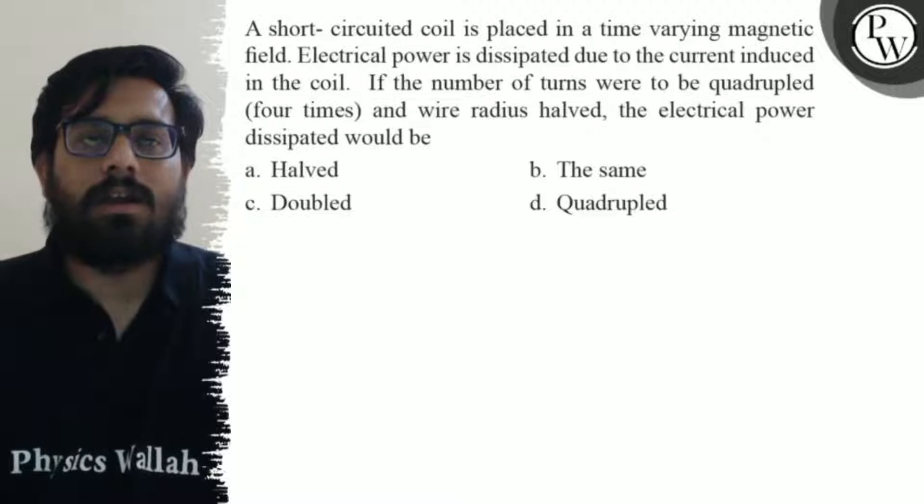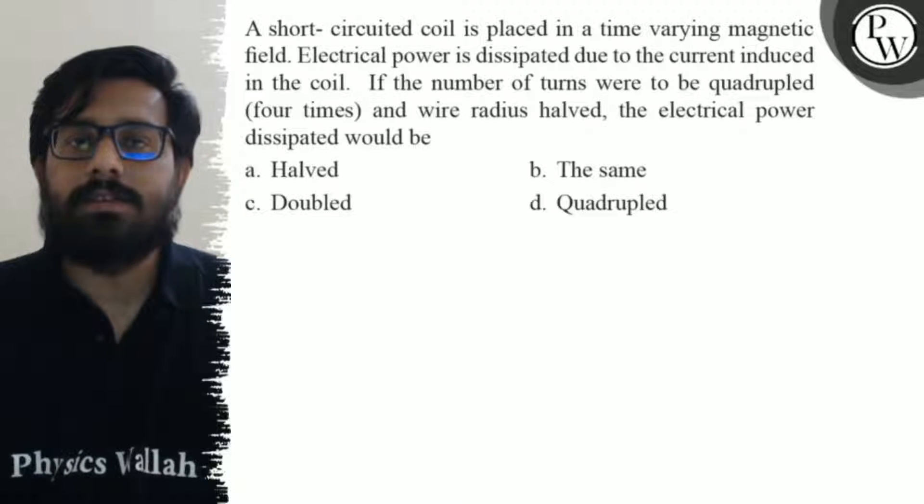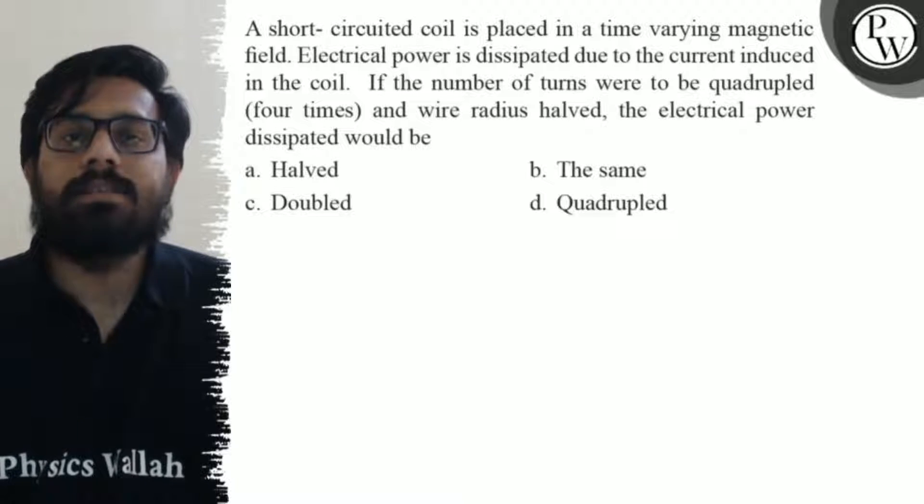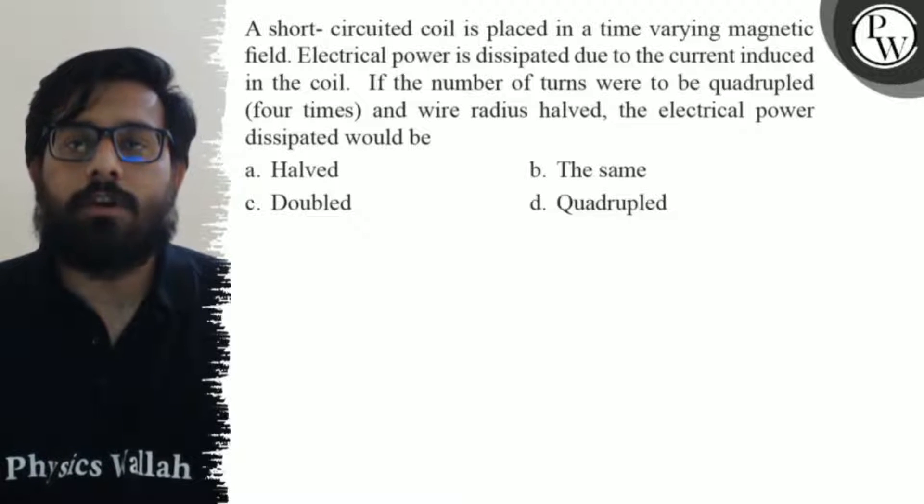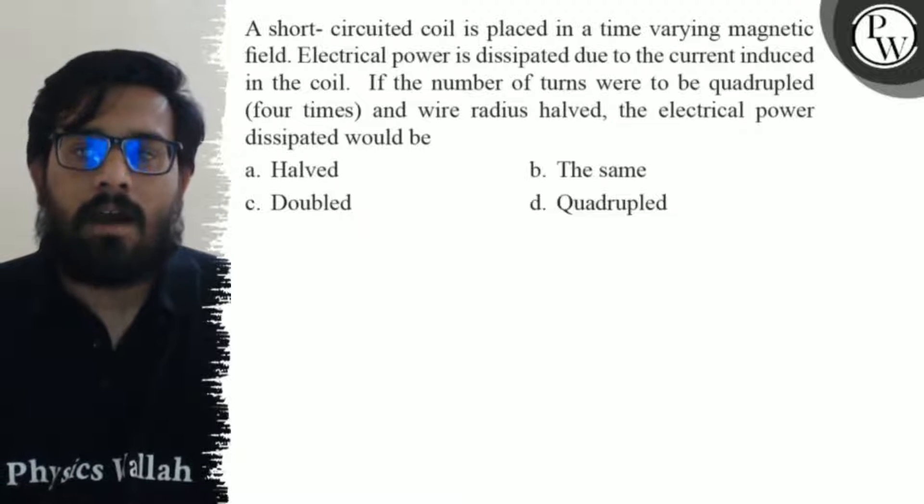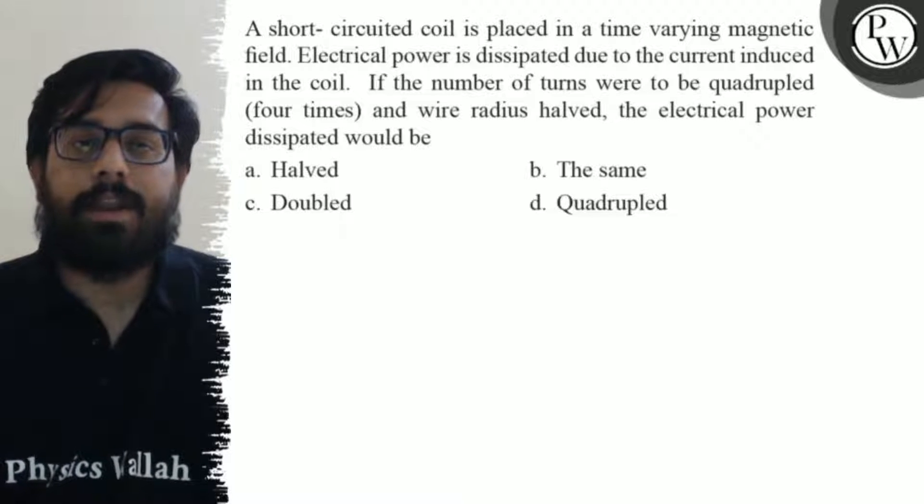Hello Macho. So let us see the question. A short-circuited coil is placed in a time varying magnetic field. The electric power is dissipated due to the current induced in the coil. If the number of turns were to be quadrupled, that means four times, and wire radius will be halved, the electric power dissipated would be.